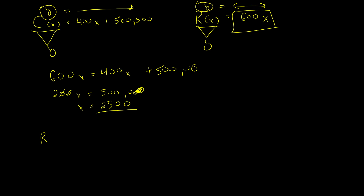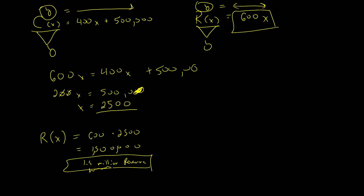The revenue at break-even is 600 times 2,500 equals $1,500,000 — or 1.5 million dollars. So it will cost 1.5 million dollars before any profit is made. If timed correctly, incoming revenue can cover the ongoing cost, so you don't need the full 1.5 million upfront — but that's the risk you take when trying to make a profit on this type of product. That's linear functions and how they work.